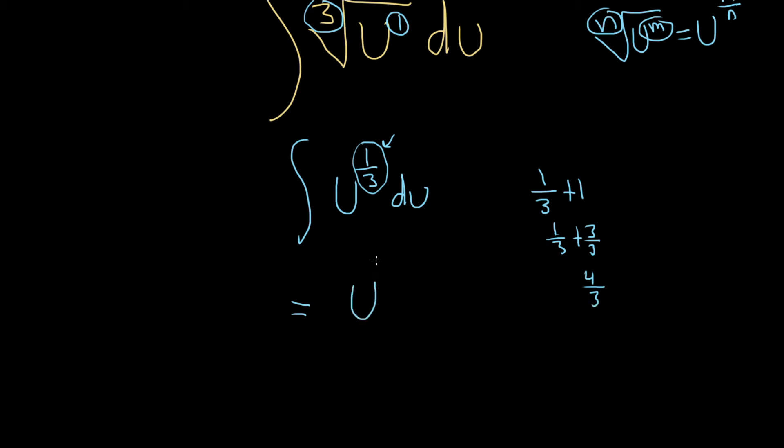So this becomes u to the 4 thirds. And then the power rule says that you divide by it also. So you put it down here. So it's pretty easy. You just add 1 and put the result here, and then you just divide by it. And then don't forget your capital C. That's called your constant of integration.